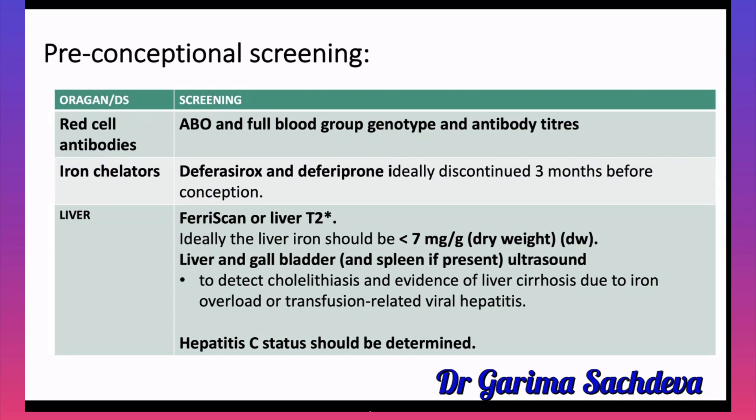For liver iron status, you perform a ferriscan or liver T2-weighted MRI. Iron deposits in the liver cause hemochromatosis, which is why this assessment is important.